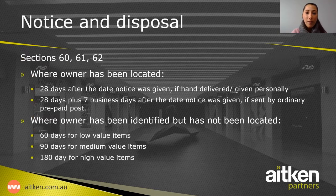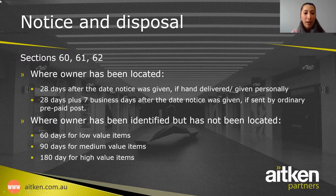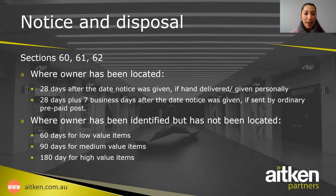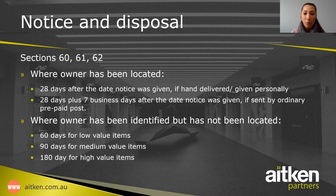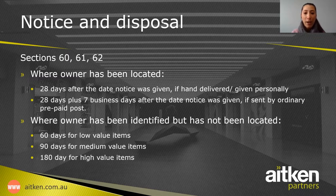In terms of notice and disposal, where an owner has been located, the owner's corporation can dispose of the goods 28 days after the notice was given if hand-delivered or given personally. If the notice was given by ordinary prepaid post, we say 28 days plus 7 business days. Where the owner has been identified but has not been located, the OC must wait 60 days before it can dispose of low-value items, 90 days for medium-value items, and 180 days for high-value items.